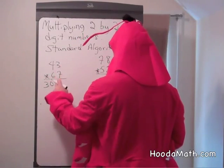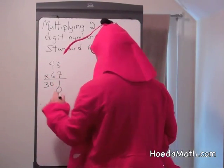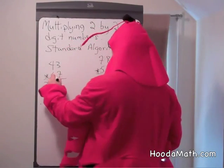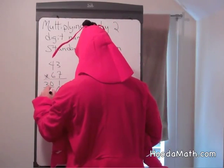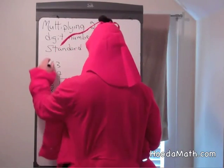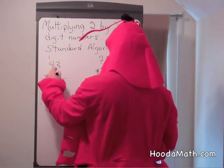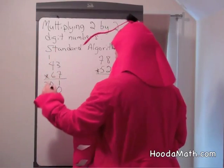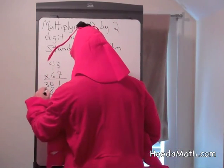6 times 3, but it's really 60, so we put a 0. 6 times 3 is 18. Regroup. 6 times 4 is 24, plus 1 is 25.